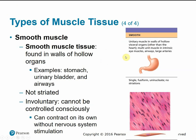Smooth muscle tissue is found in the walls of hollow organs like the stomach, the bladder, and some of the airways. It is not striated — it has that smooth appearance — and it's also involuntary. We can't control our digestive organs, so smooth muscle contracts on its own without nervous system stimulation, running automatically in the background.